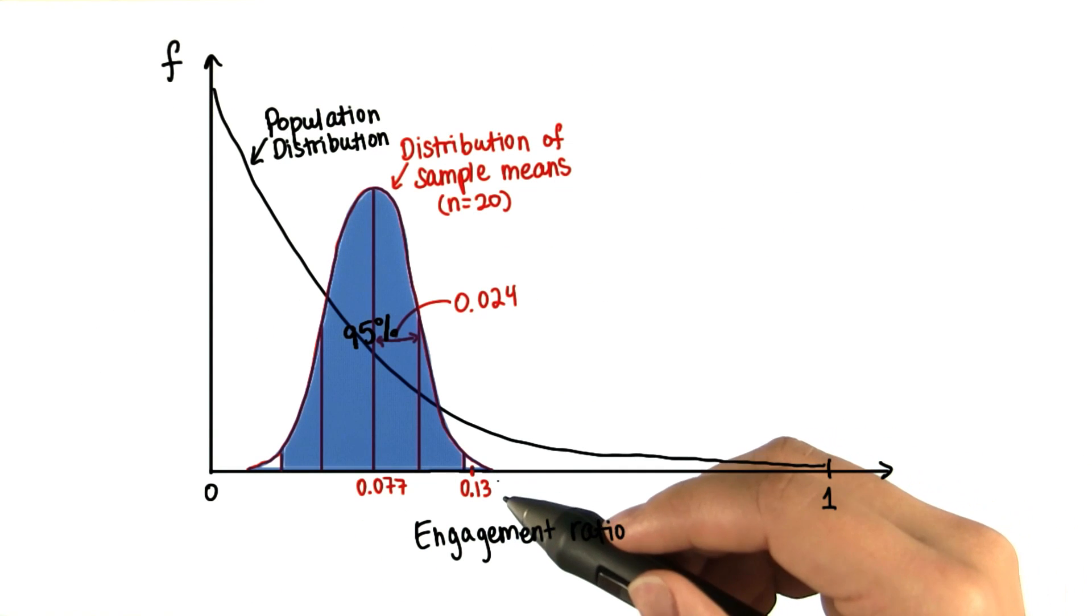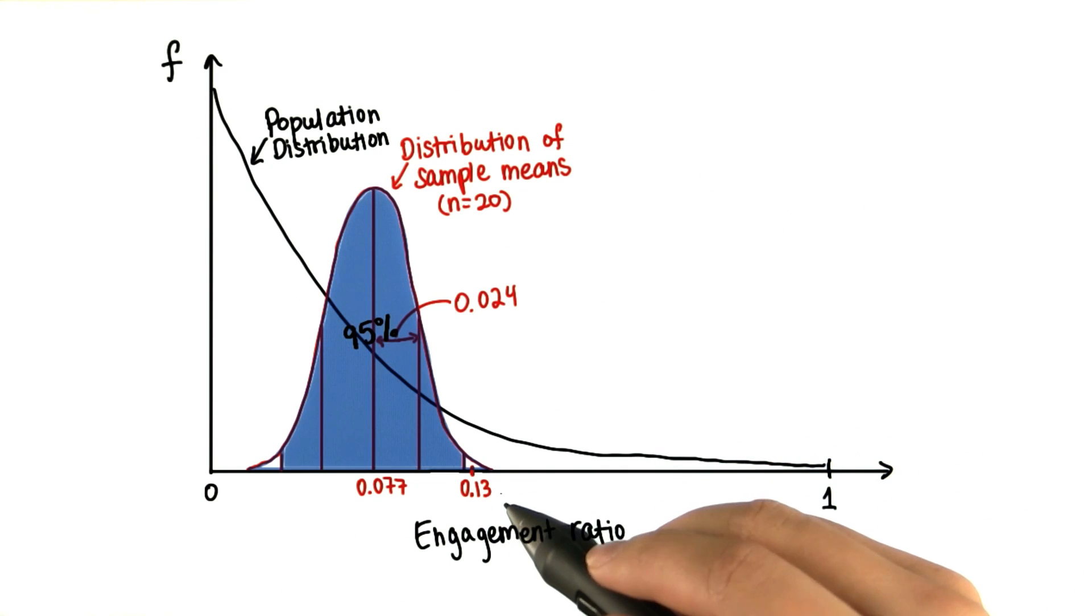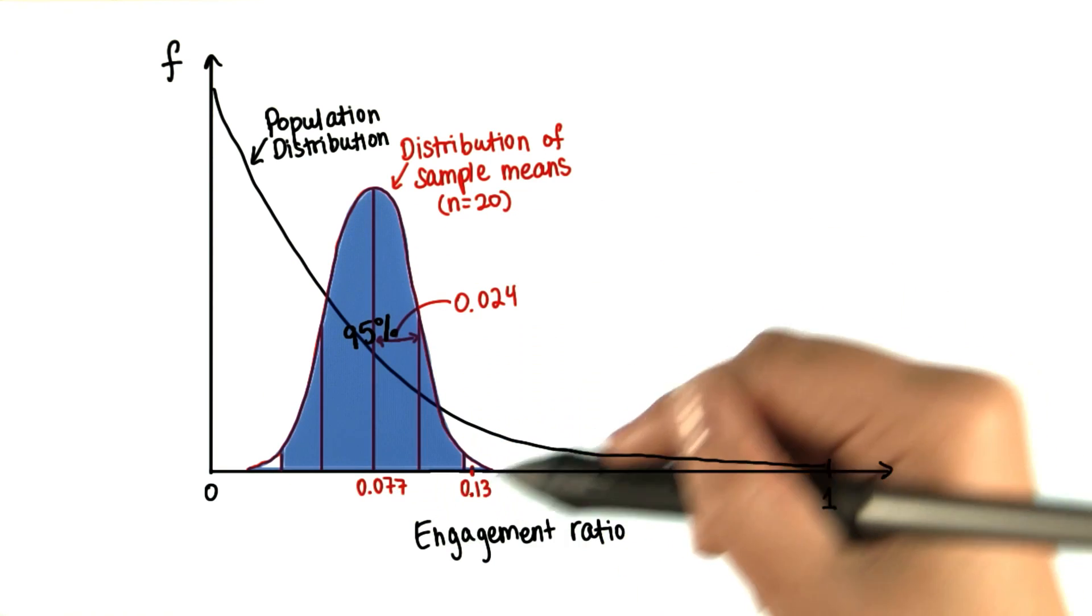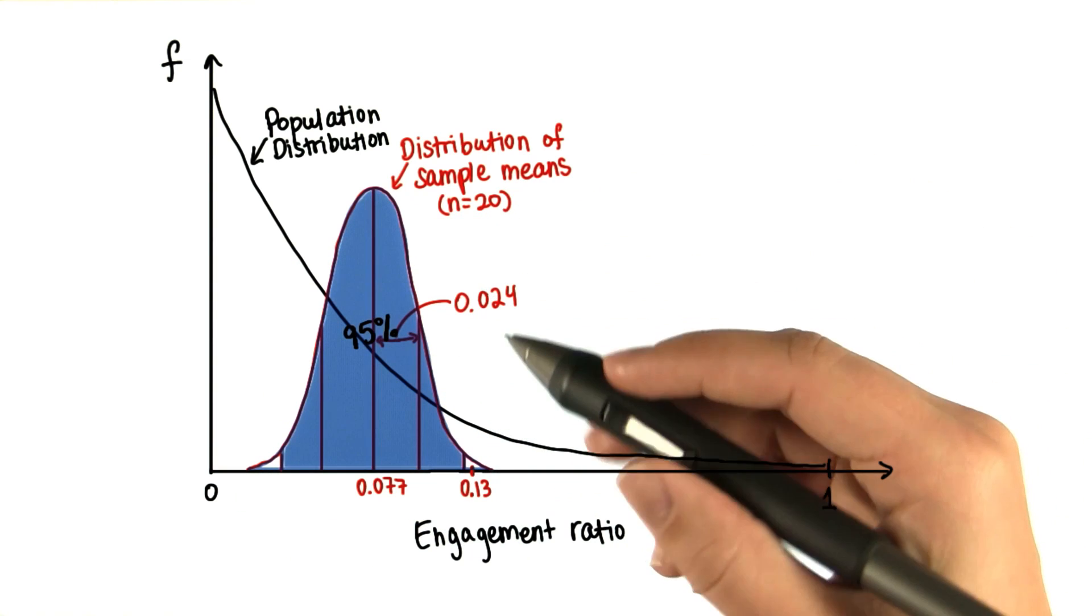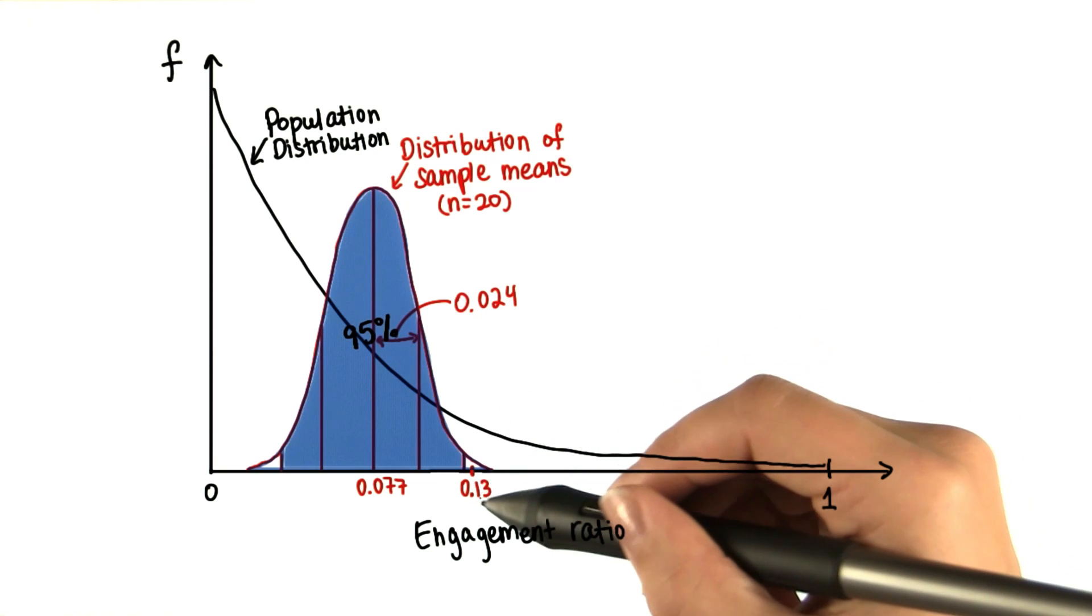Based on the results from our sample mean, which was 0.13, then the true population mean, if everyone has access to this musical lesson, will be somewhere around 0.13.